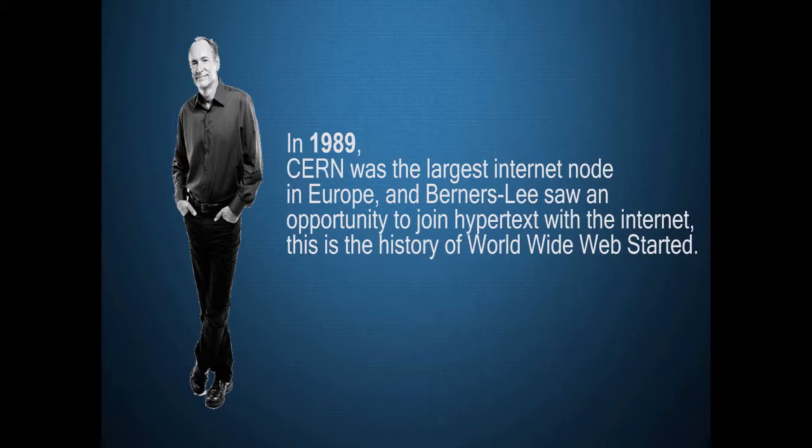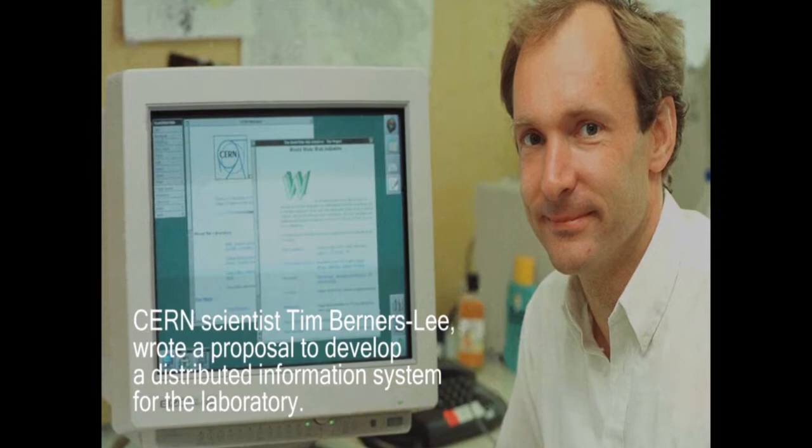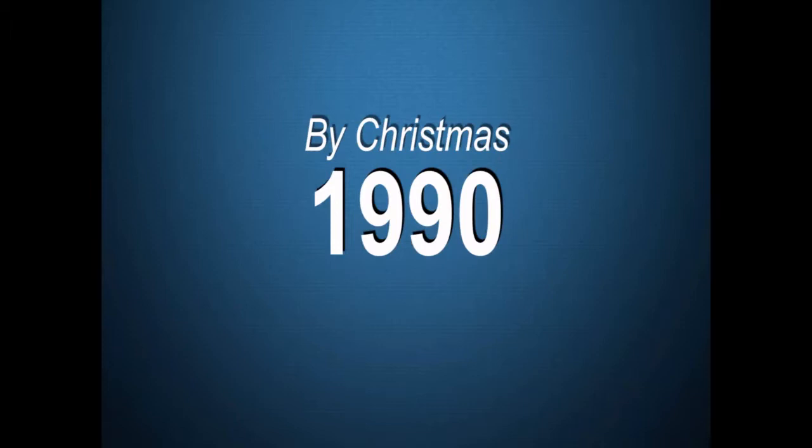In 1989, CERN was the largest internet node in Europe, and Berners-Lee saw an opportunity to join hypertext with the internet — this is where the history of the World Wide Web started. In March 1989, CERN scientist Tim Berners-Lee wrote a proposal to develop a distributed information system for the laboratory.